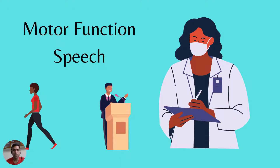Awake craniotomy is basically done to identify two main functions: the movement of the body, which is called motor function, and your talking ability, which is called speech function. Sometimes it is also done for vision — that is your seeing capacity.